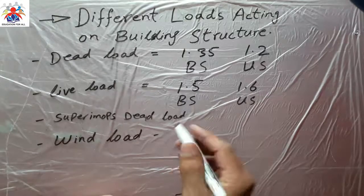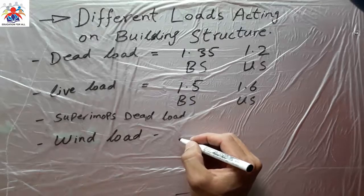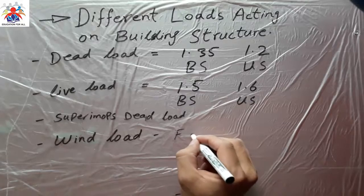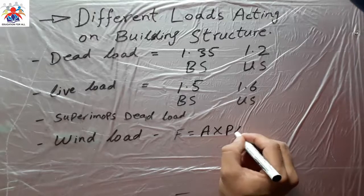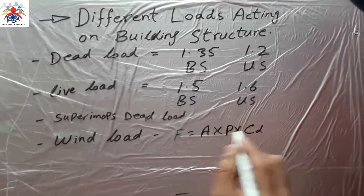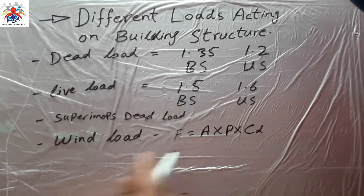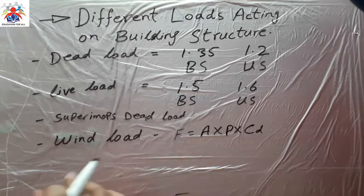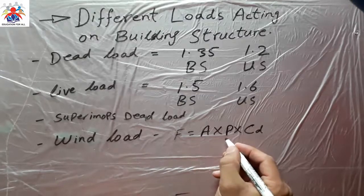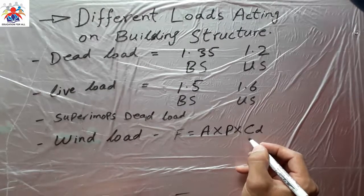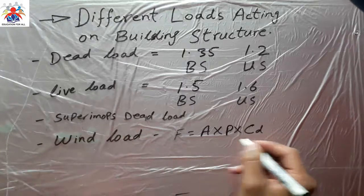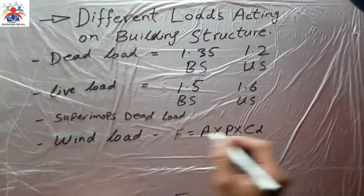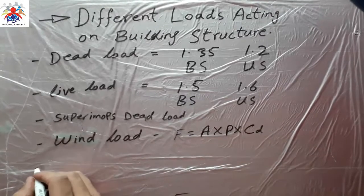When high wind comes it pushes the structure in another direction. The formula for wind load is: F = A × P × CD, where F is the force, A is the area of the object, P is the wind pressure, and CD is the drag force. I will make a separate video on how to calculate wind load properly.